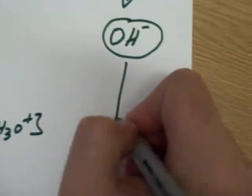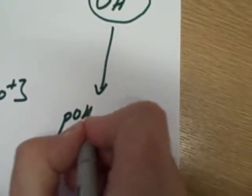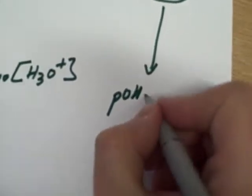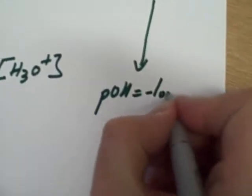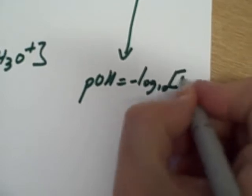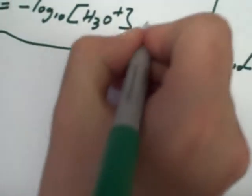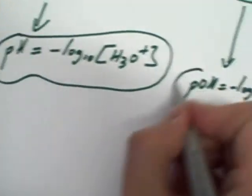In the same way, if I want to calculate the pOH, strong base, pOH will equal minus log to the base 10, concentration, OH minus ions. Very easy to remember. And these are very important equations.